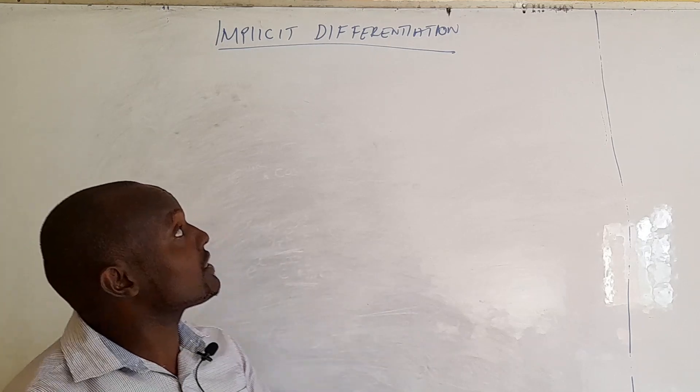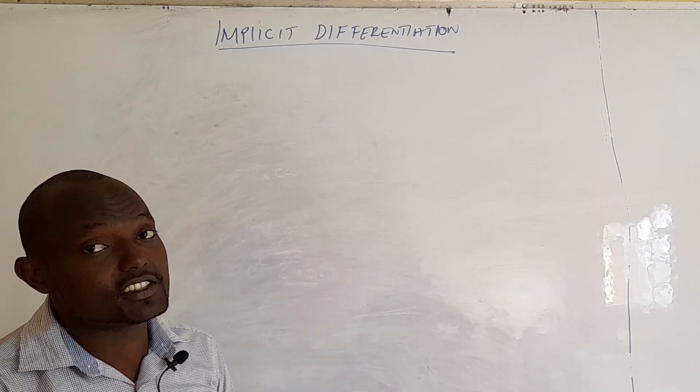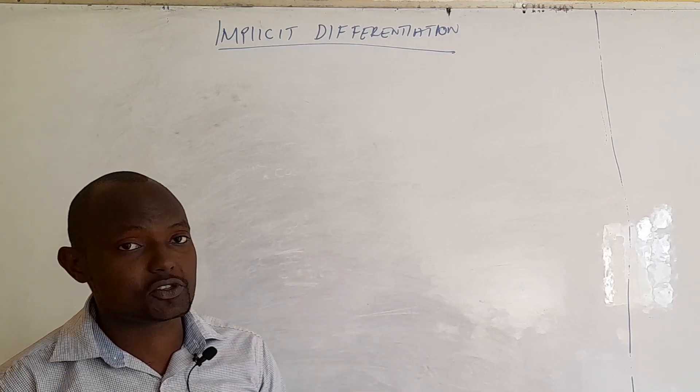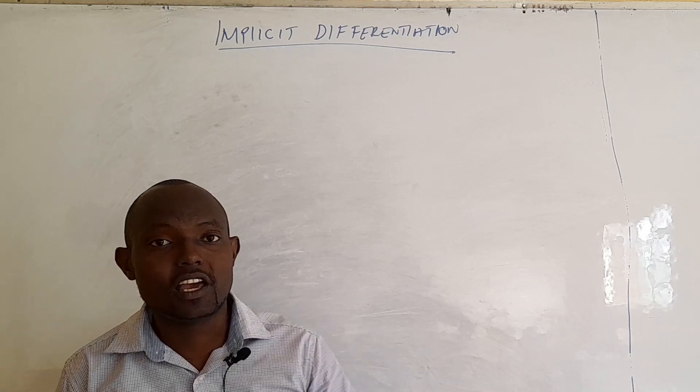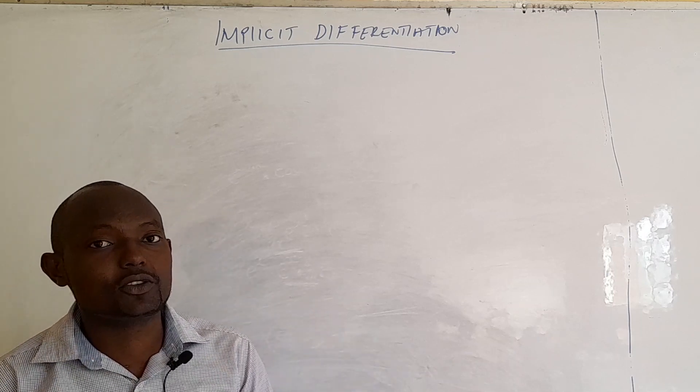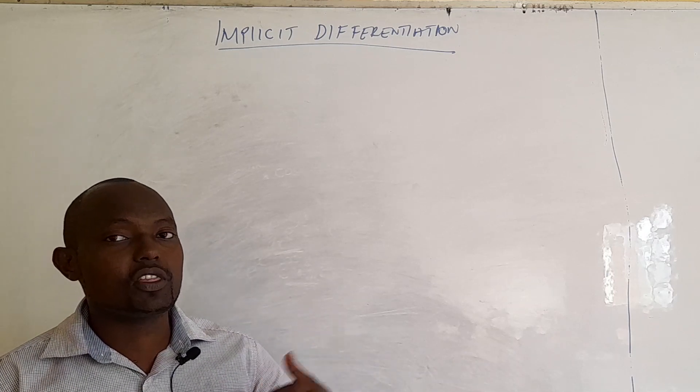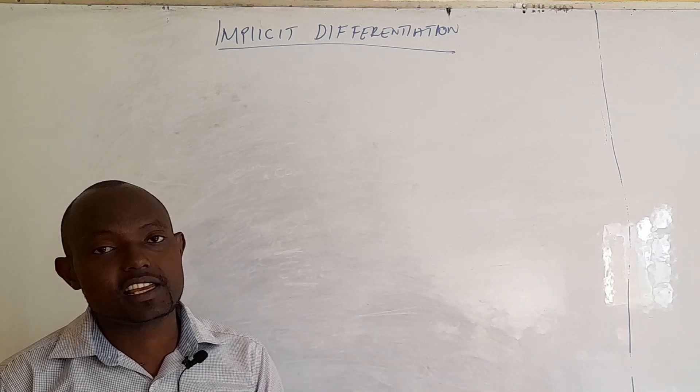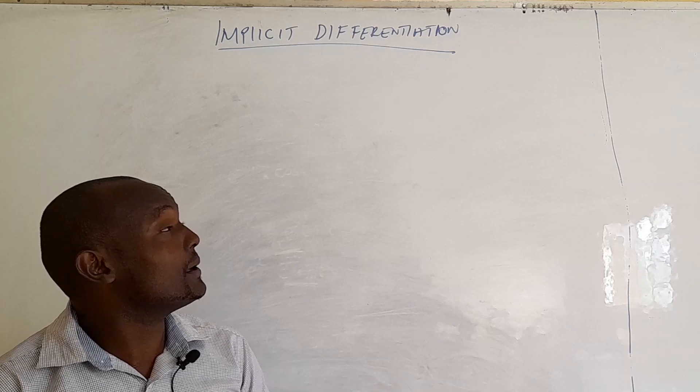So what is implicit differentiation? This is a situation where you find that you are differentiating both parts of the equation — both the right-hand and left-hand side of the equation.